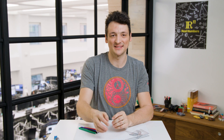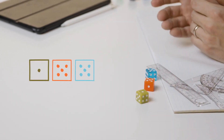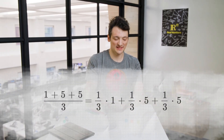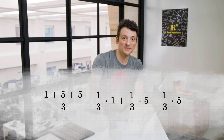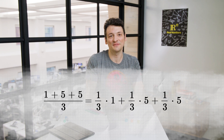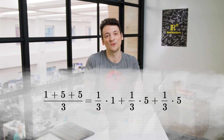We know what an average of a set of n values is — it's the sum of the values divided by n. For example, the average of these three die rolls is 11 thirds: 1 plus 5 plus 5 divided by 3. We can rewrite this as one-third times 1 plus one-third times 5 plus one-third times 5, and instead think of the average of three values as the weighted sum of the values, where the weights are all equal and add up to 1.